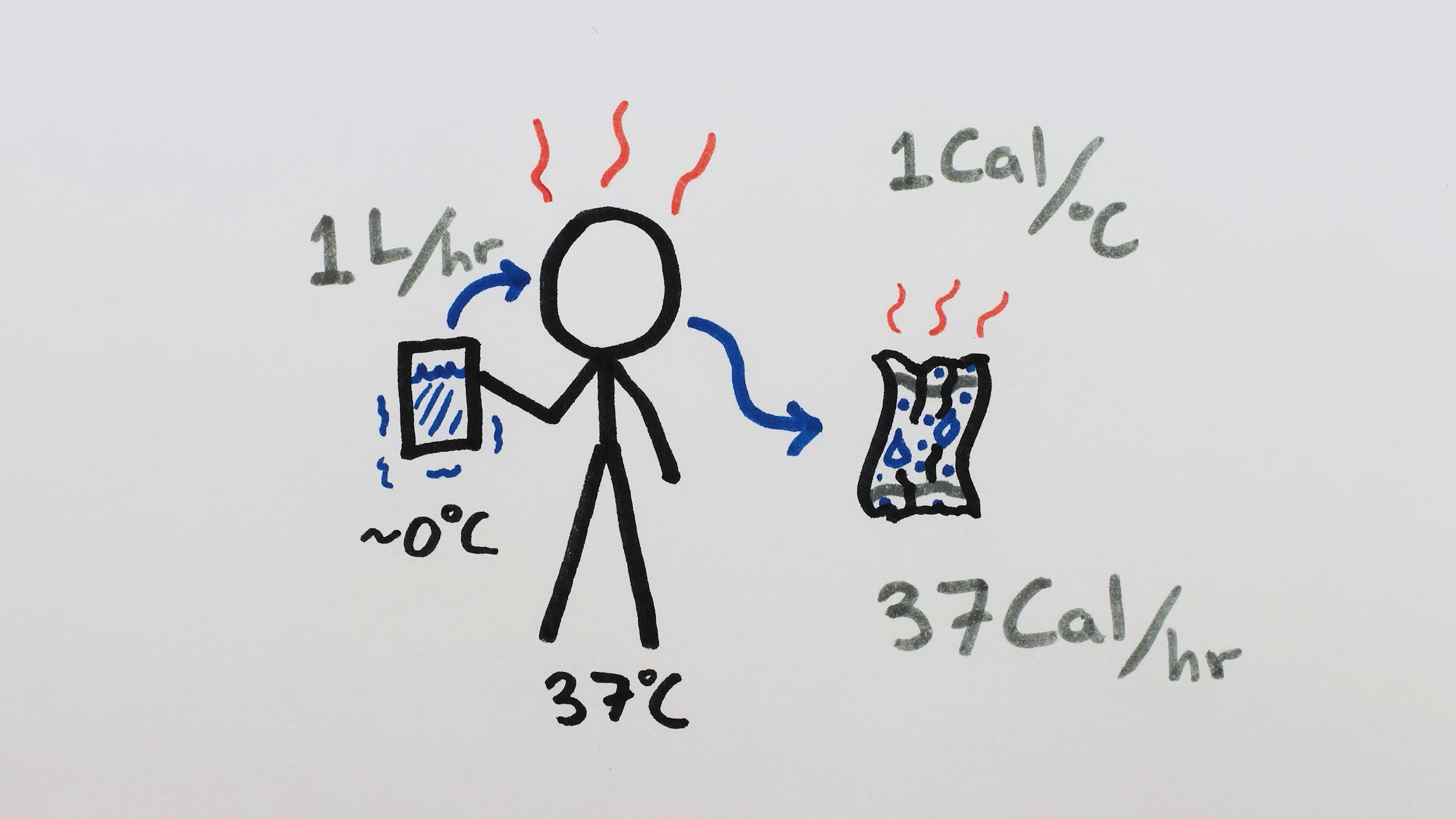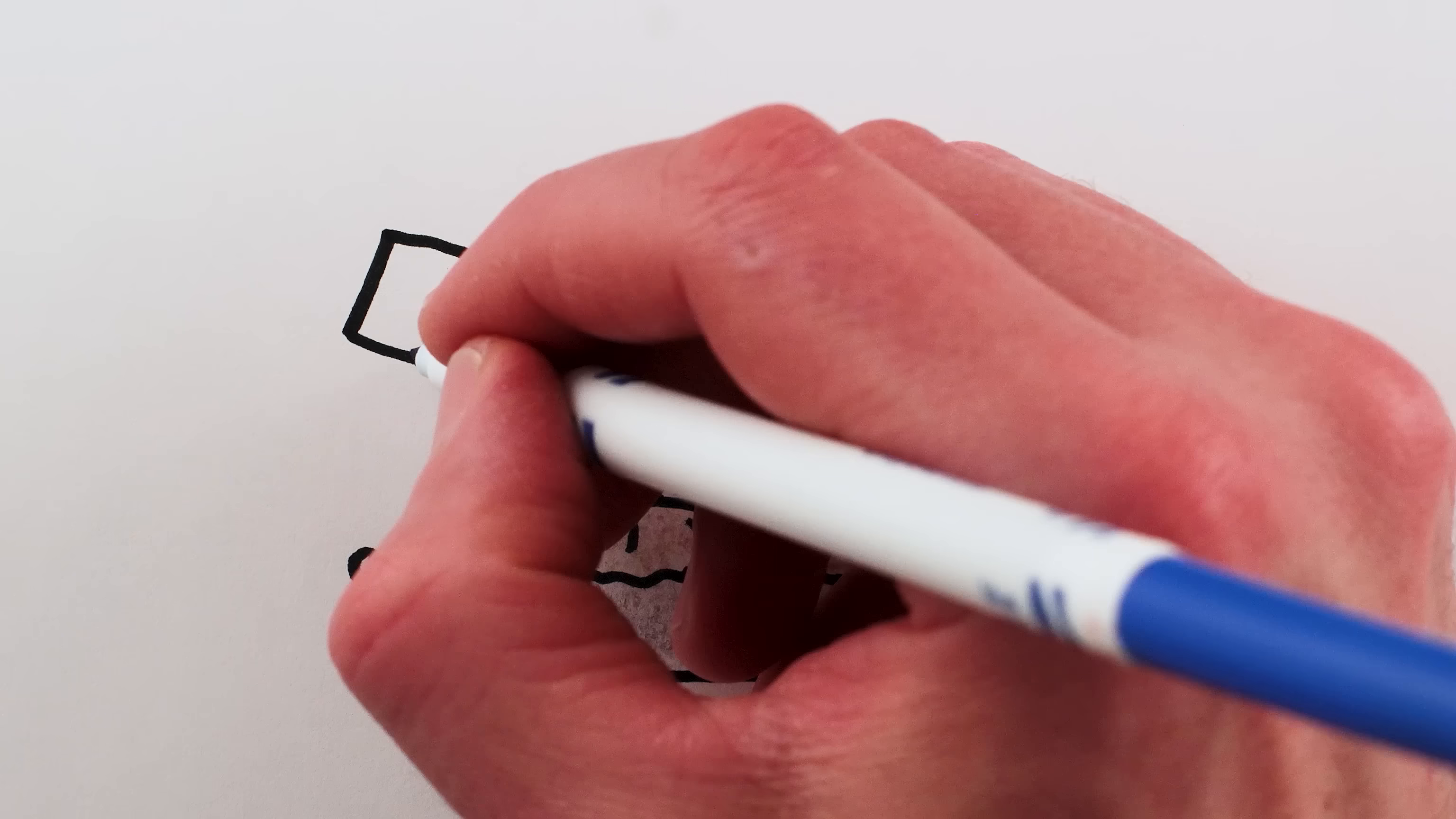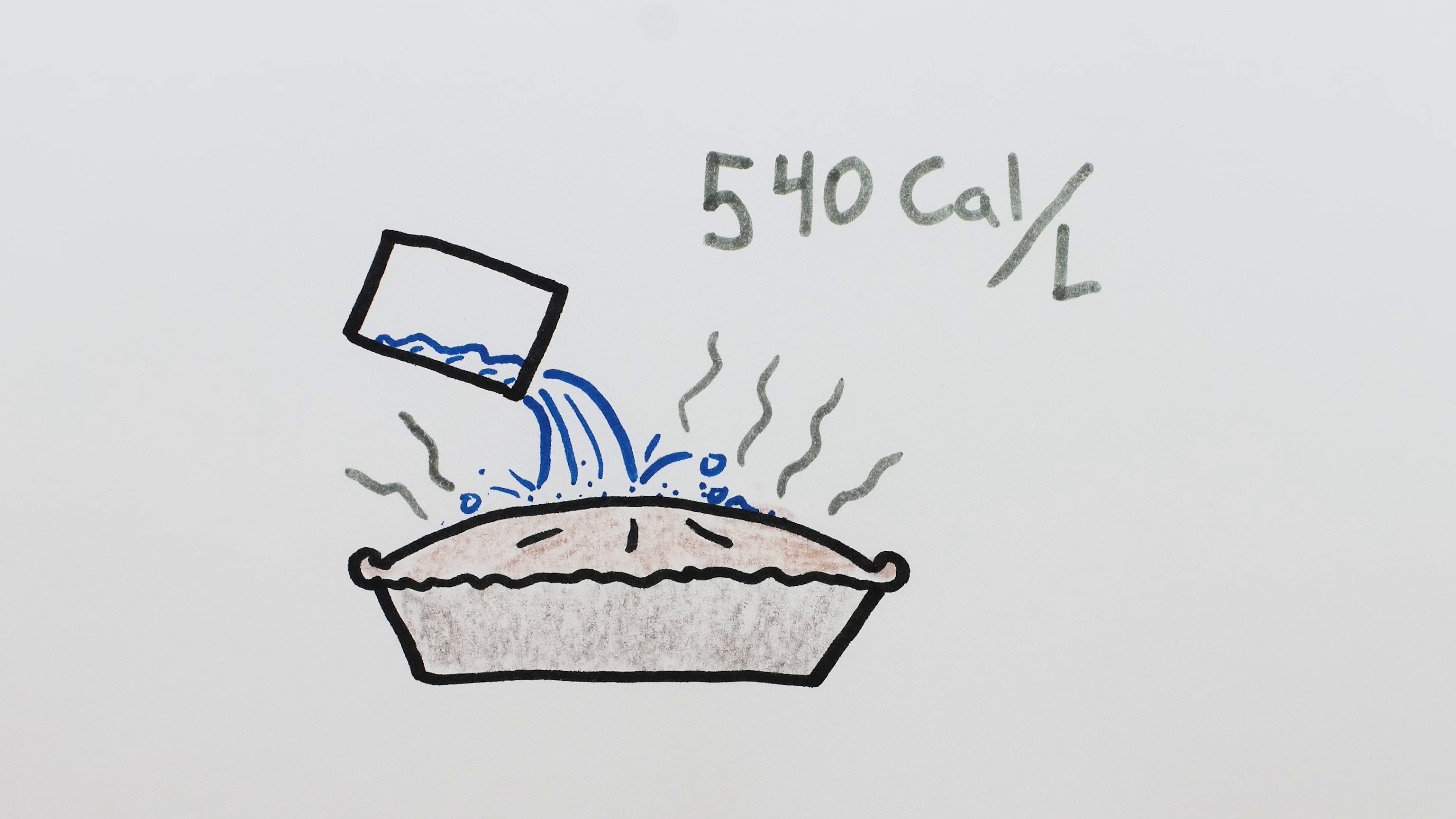The second water cooling method is to put water on the object and let it evaporate. A liter of water to evaporate absorbs around 540 calories of heat, which is a lot more than the 37 calories removed by drinking and urinating ice water.